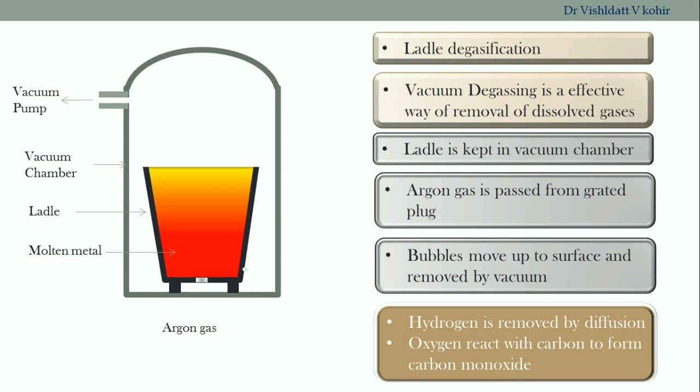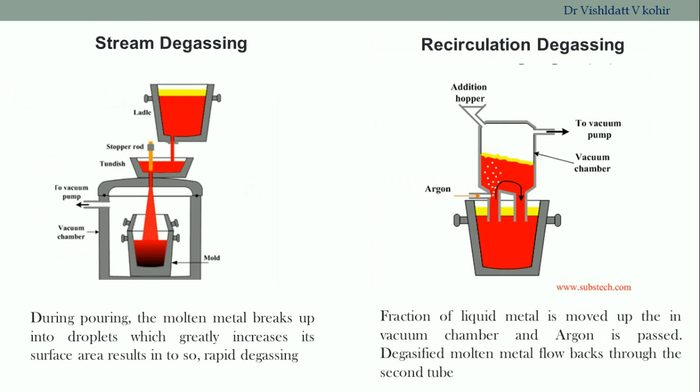There are different variations of vacuum degassing. In case of stream degassing, the molten metal is poured in the form of a stream into the ladle. Because of that, the surface area becomes more, which leads to rapid degasification.